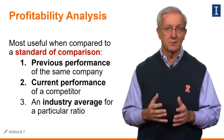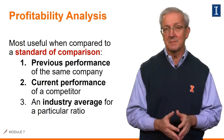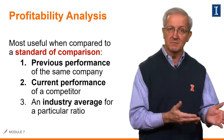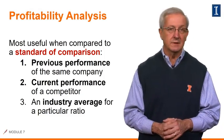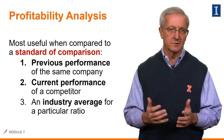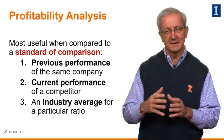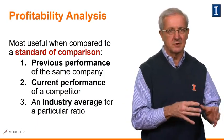Second is the current performance of a competitor. For example, maybe we compare Apple versus Microsoft. And thirdly, we have an industry average for a particular ratio, which gives us an idea of how we're going in relation to our peer group.